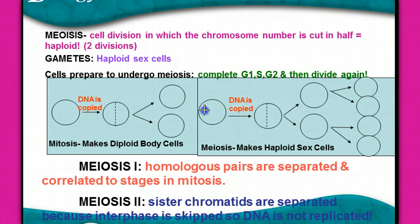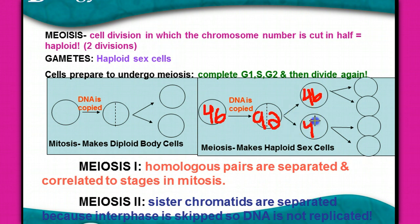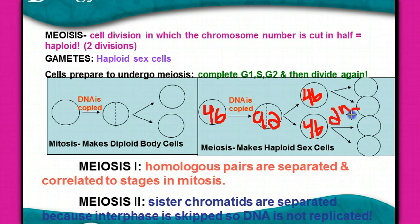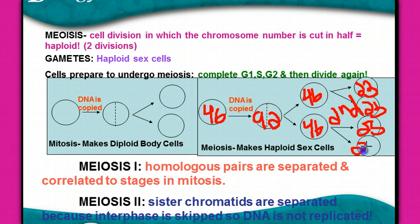Normally in meiosis, a cell has 46 chromosomes. It goes through its normal first division, just like mitosis, creating 92 chromosomes because it doubles. In the first division, we create cells that each have 46 chromosomes. Because there is no replication of the DNA in the second meiotic division, we end up with 23 chromosomes in each new cell.